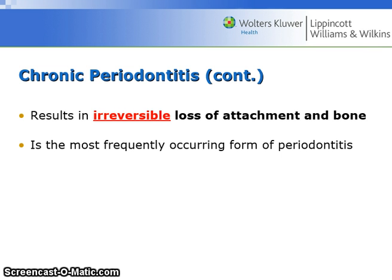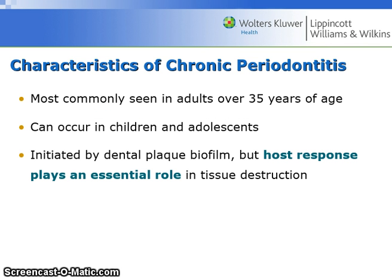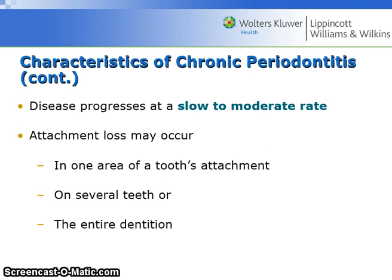Chronic periodontitis results in irreversible loss of attachment and bone. It is the most frequently occurring form of periodontitis. Characteristics are most commonly seen in adults over 35 years of age, but it can occur in children and adolescents. It is initiated by dental plaque biofilm, but the host response plays an essential role in tissue destruction. The disease progresses at a slow to moderate rate. Attachment loss may occur in one area of a tooth, on several teeth, or on the entire dentition.